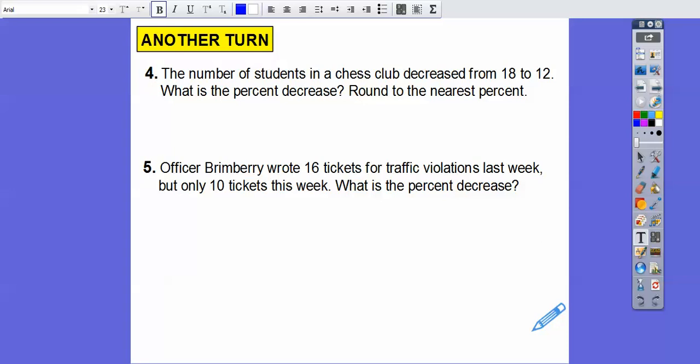All right, the number of students in a chess club decreased from 18 to 12. What percent decrease? And this one says round to the nearest percent. So the change is 18 minus 12, which is 6. Then we do 6 divided by the first number, 18, which is 0.33333. So I'm going to say about 33%. It's 33.33333, but it's closer to 33% than it is 34%.